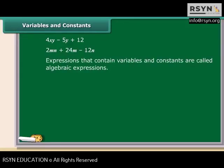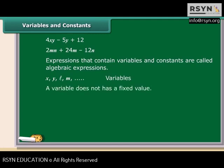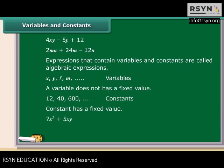Expressions that contain variables and constants are called algebraic expressions. Letters such as X, Y, L, M and so on are used to denote variables. A variable can take various values and its value is not fixed. On the other hand, a value that does not change is a constant. So in the expression 7X squared plus 5XY plus 8, X and Y are the variables and 8 is a constant.